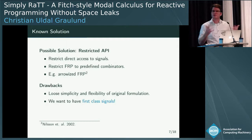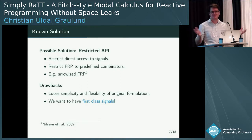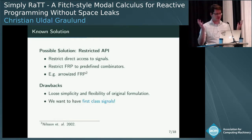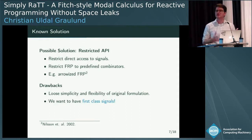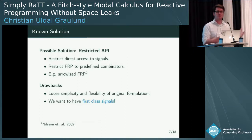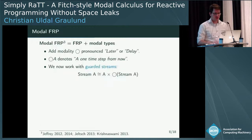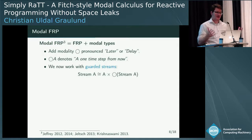One possible solution is to restrict the API — tell programmers they can't have direct access to signals because it's dangerous, and only provide predefined combinators. That can be very successful; the arrowized FRP approach is based on this. But it has drawbacks — you lose the simplicity and flexibility of working with first-class signals. So we really want first-class signals. One approach that achieves this is modal FRP: you take FRP and add modal types, typically a 'later' or 'delay' modality where circle-A denotes A one time step in the future.